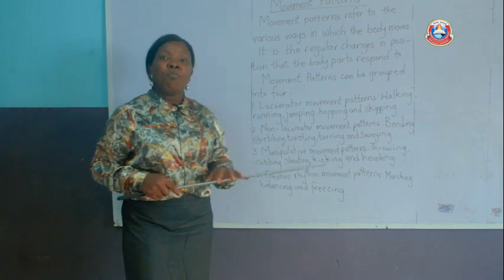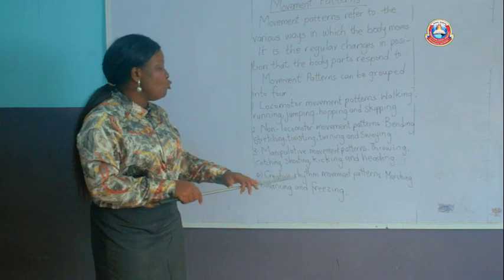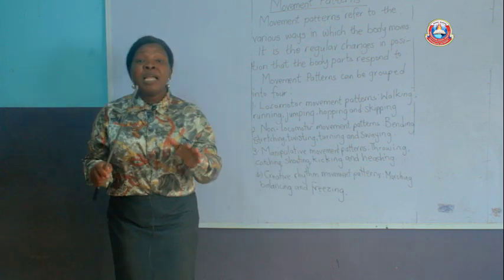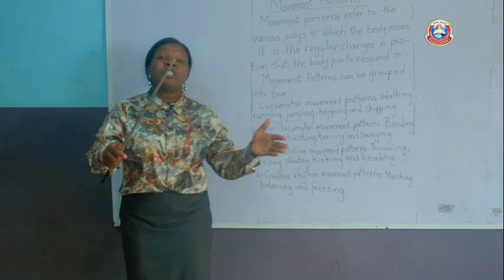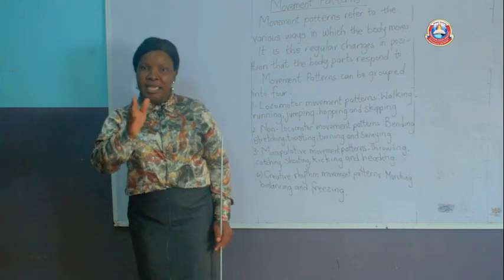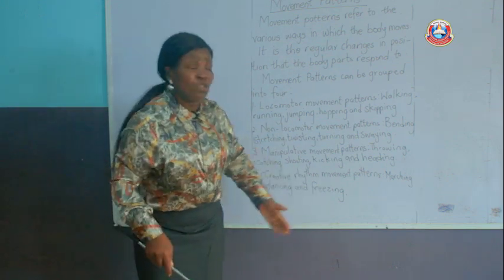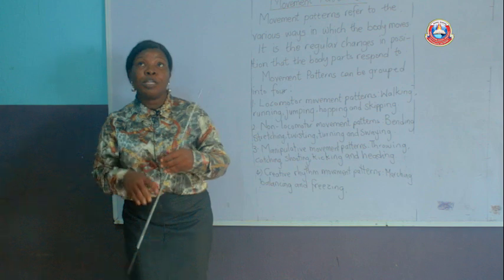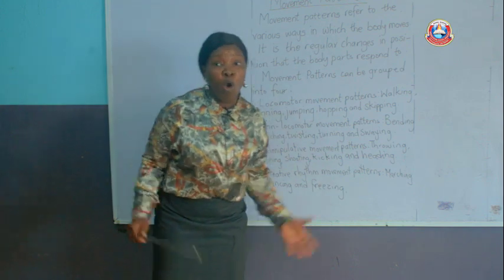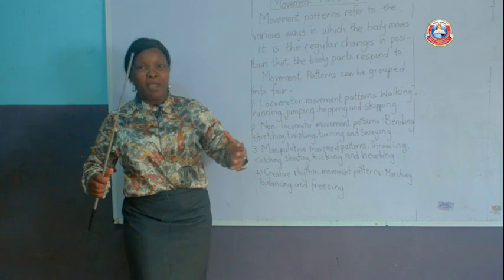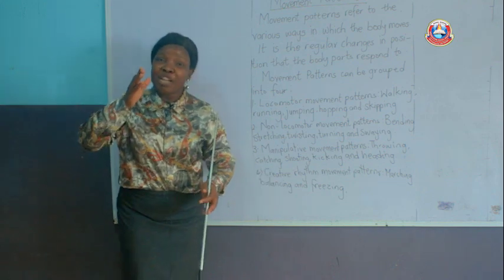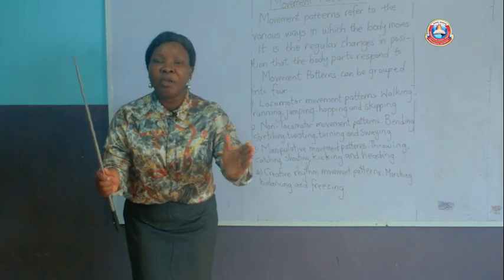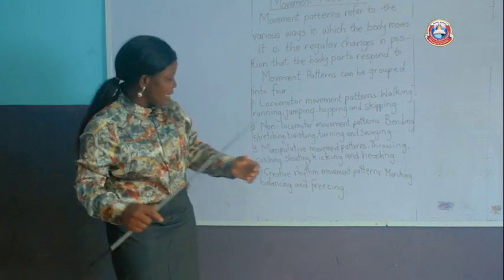We have the last group — it is called the creative rhythm movement patterns. This movement pattern usually goes with music, and there is uniformity in it. There is an order, a process to be followed. It is usually associated with music, unlike manipulative movement patterns where you just try to strike a balance.